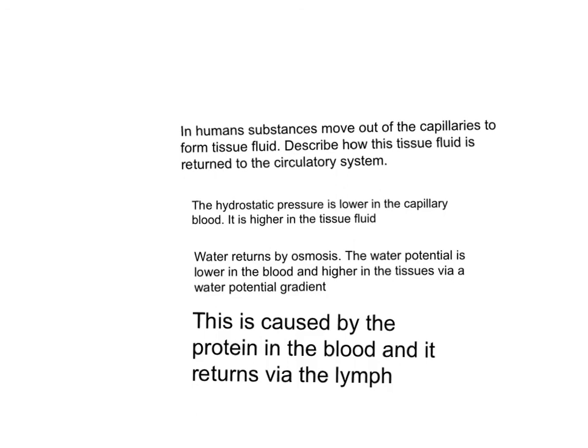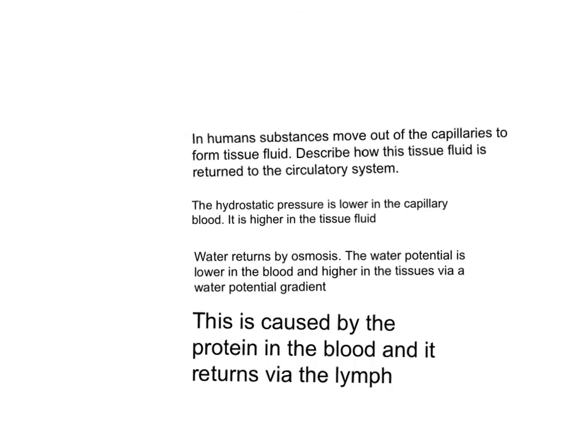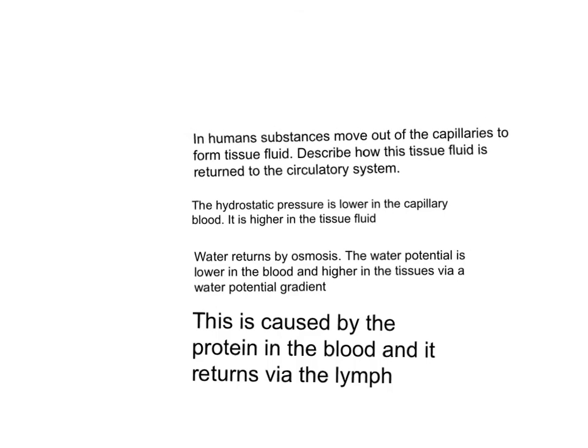Let's return to the question. In humans, substances move out of the capillaries to form tissue fluid. Describe how the tissue fluid is returned to the circulatory system. The hydrostatic pressure is lower in the capillary blood and higher in the tissue fluid. Water returns by osmosis. The water potential is lower in the blood and higher in the tissues via a water potential gradient. This is caused by the protein in the blood, and it returns via the lymph. This will give you the three marks.